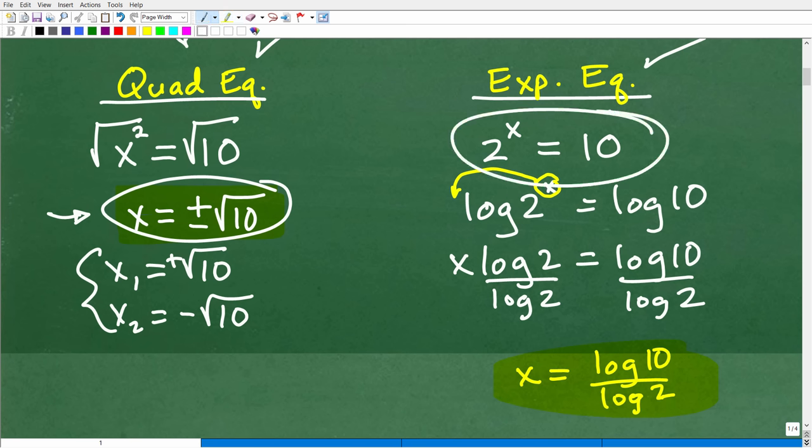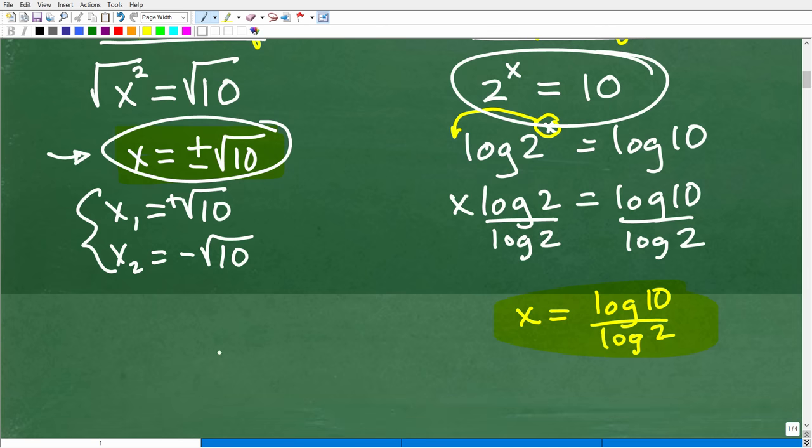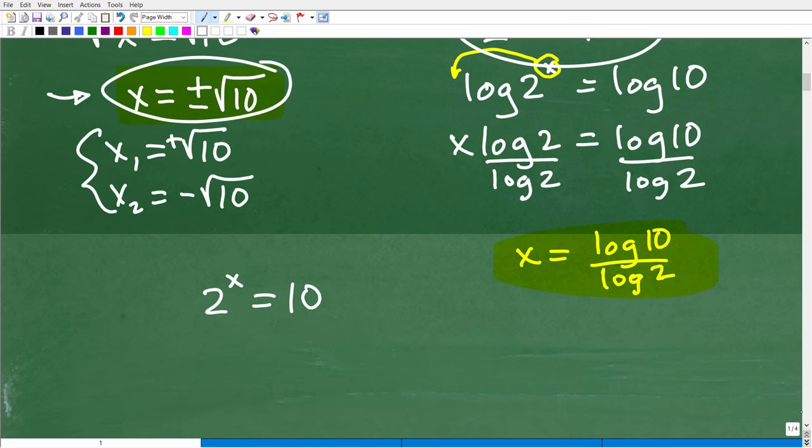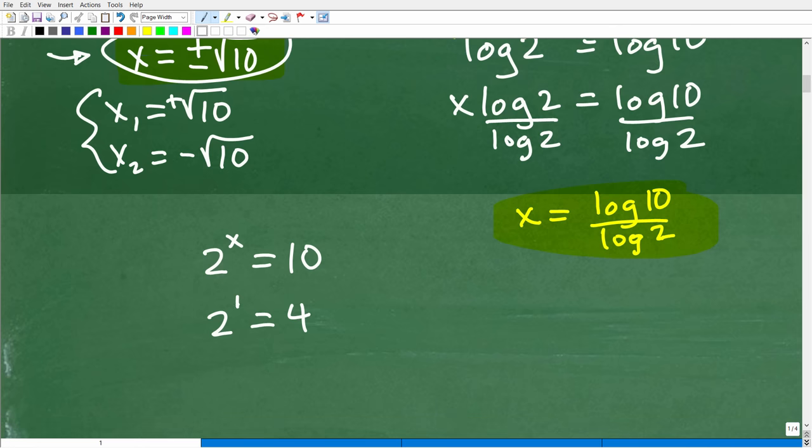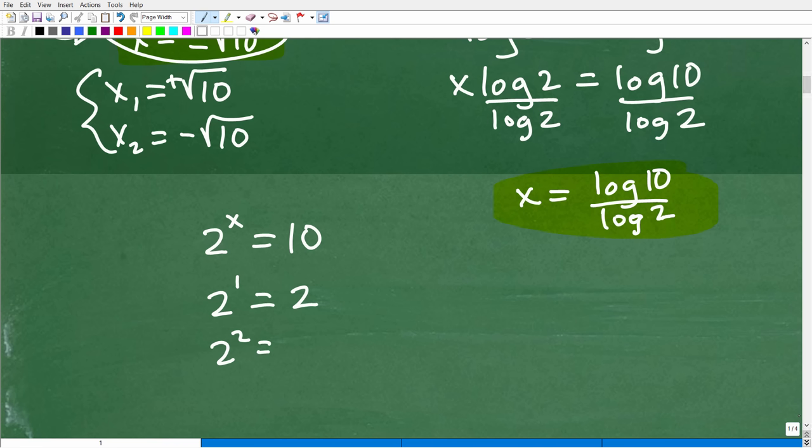Let's take a look at 2 to the x power equals 10. This is the real power of logarithms. Let's say we didn't know logarithms and we're like, 2 to what power is 10? Is it 2 to the 1st? No, because 2 to the 1st is 2. Let's increase our power. How about 2 squared? 2 squared is 4. That's not going to work. 2 to the 1st is 2, 2 squared is 4. I'm looking for 2 to what power is 10.